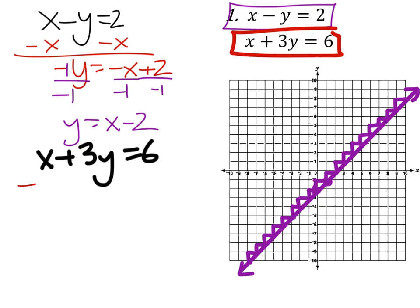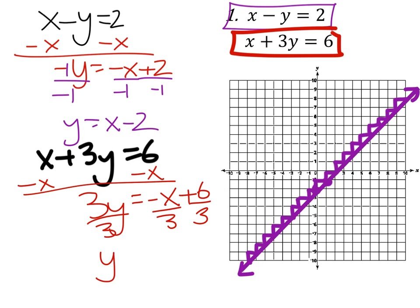What we'll do is subtract an x from both sides. So that gives us 3y equals negative x plus 6. Then we'll divide by 3 everywhere, which gives us y equals negative one-third x plus 2, because there was the phantom one there.